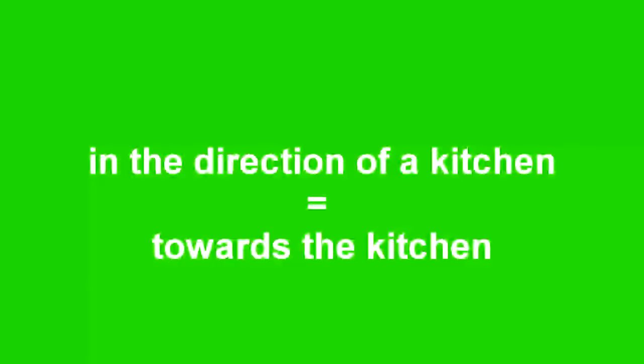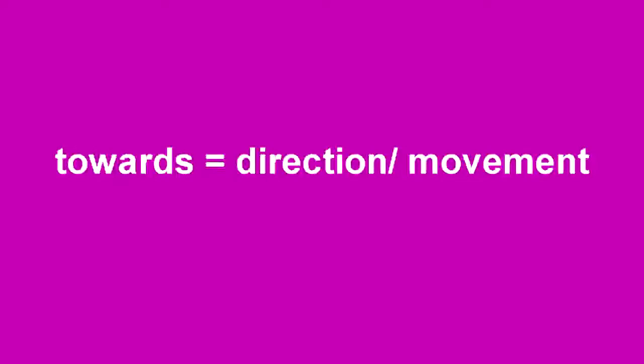If someone is walking to the kitchen, you can say, oh, he's walking towards the kitchen because he's hungry. This is how you can use toward in sentences. So basically, toward is about the direction or about the movement.